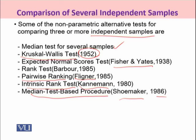Comparing all these non-parametric alternative tests, the Kruskal-Wallis test is considered more powerful than the others in terms of its assumptions. It will be used to compare several independent samples with respect to their median differences. However, if we compare it with ANOVA, ANOVA is more powerful than the Kruskal-Wallis test provided the populations are normal. If populations are normal, we use ANOVA; if ANOVA assumptions are not met, we use the Kruskal-Wallis test.